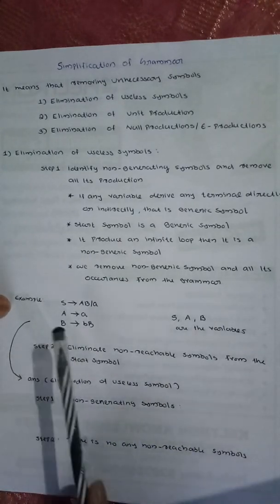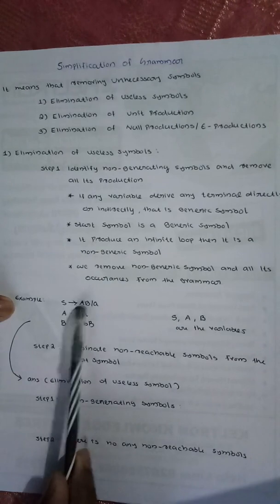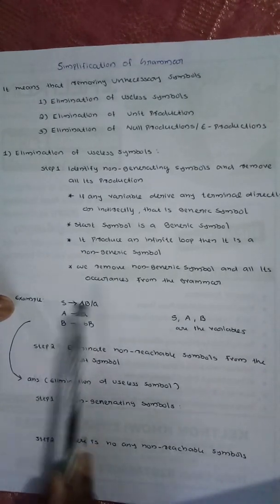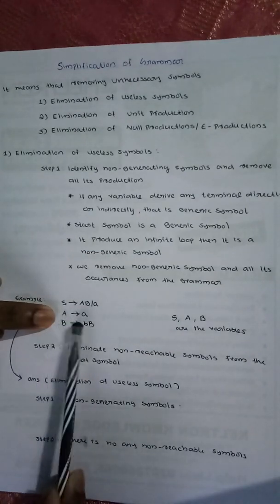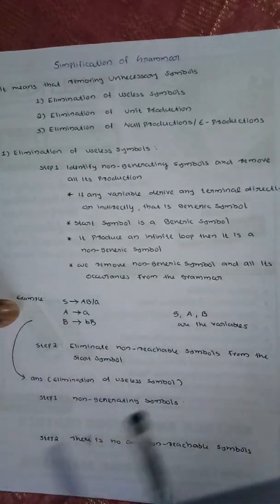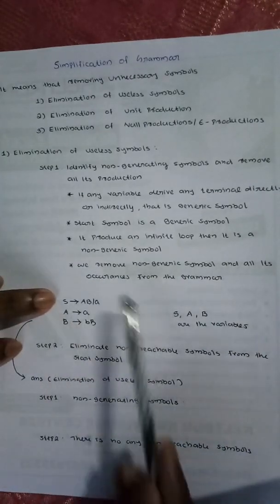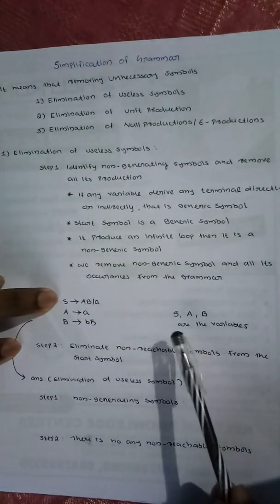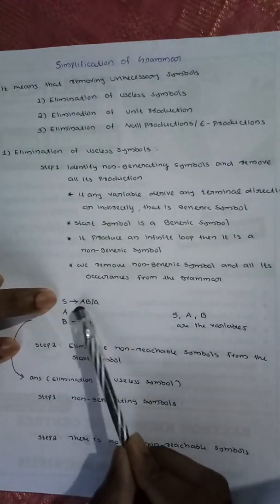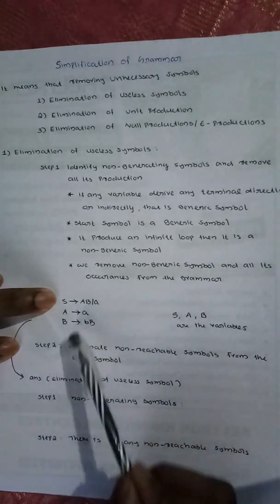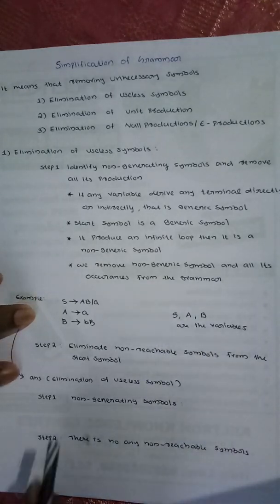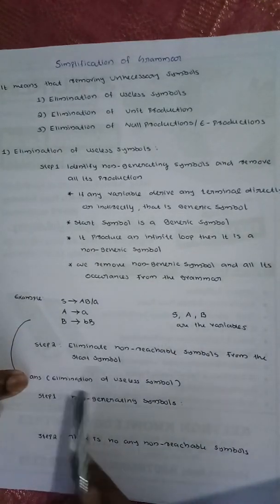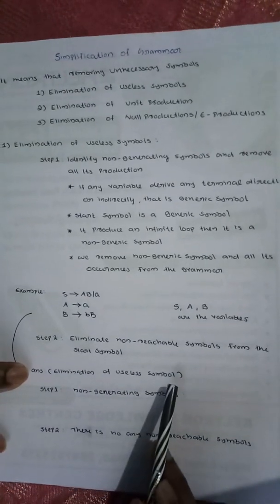Example: S derives capital AB, S derives small a, A derives small a, B derives BB. This is the grammar. The variables are S, A, and B. The first step is elimination of useless symbols.